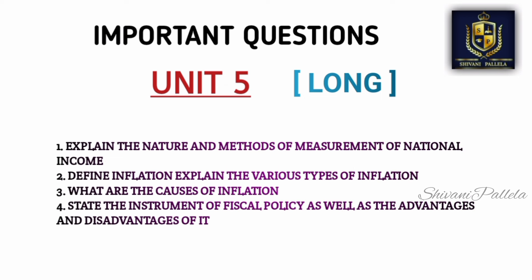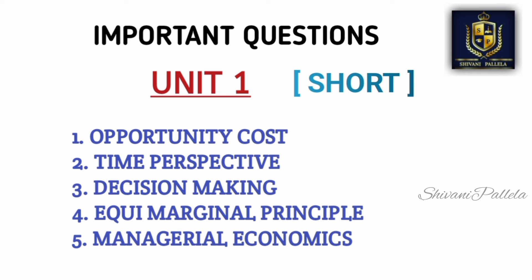For Unit 5 I have given four questions: measurements of national income, inflation and its types, and causes of inflation are the three most important. Fiscal policy is not that easy, so just concentrate on national income and inflation. Out of these two, one question will definitely appear in the long answer section — either national income or inflation, or possibly both.